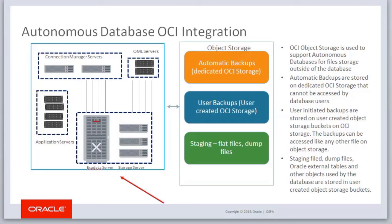Oracle Autonomous Database performs automatic backups on provisioned databases, and backups get stored in Oracle Object Store. Backups are automatic and no setup is required by users. However, Autonomous Database allows users to create their own backups for other operational purposes, including point-in-time recovery if needed. That backup needs to be stored in a user-defined OCI Object Store bucket. Buckets and credentials need to be defined by the user, and those setup backups are user-maintained. The backups can be accessed like any other file on object store. Staging dump files, Oracle external tables, and other objects are stored in user-created object storage backup buckets.